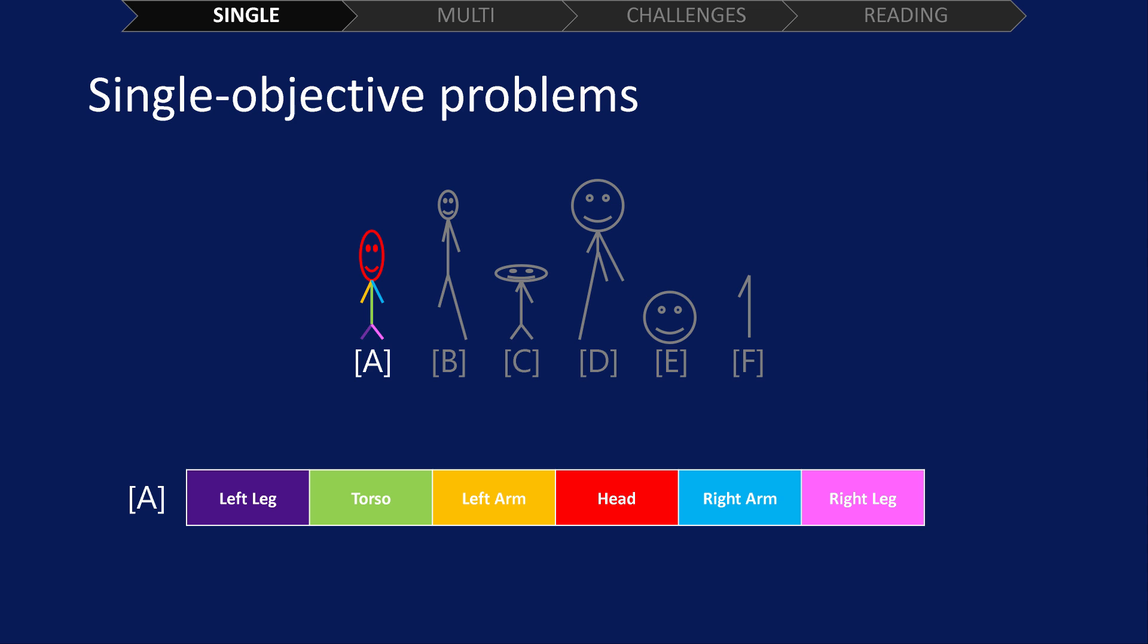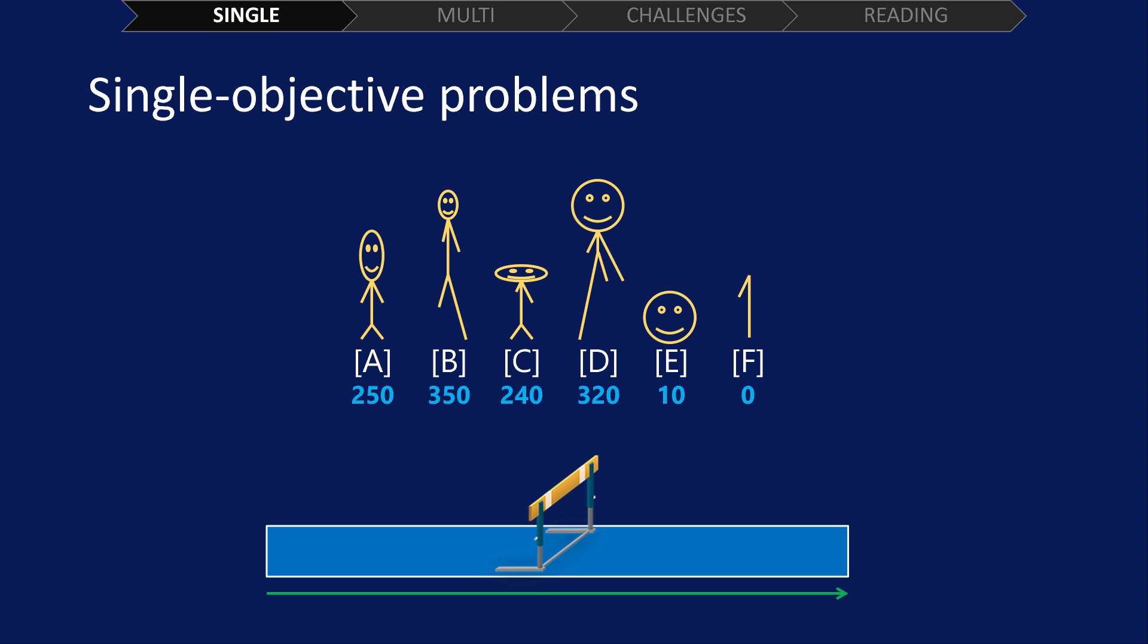The stick figure would run along the track and be scored on how far it could make it. This problem is what we refer to as a single objective problem. This is because we're only looking to optimize a single score. In this case, it's the distance traveled by the stick figure.